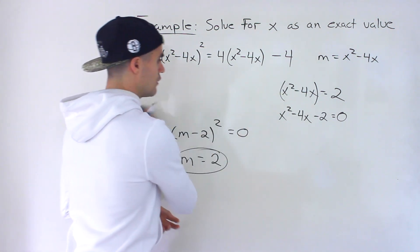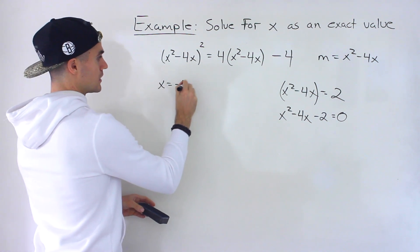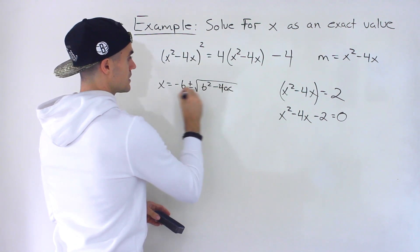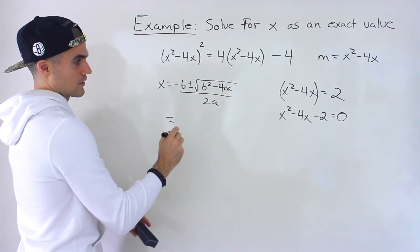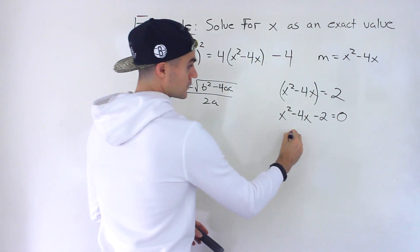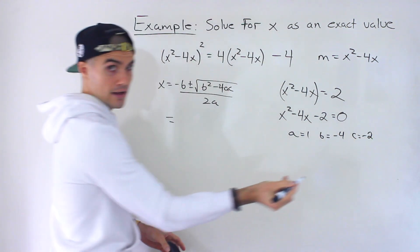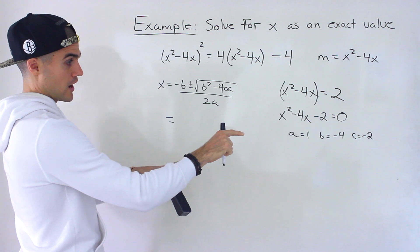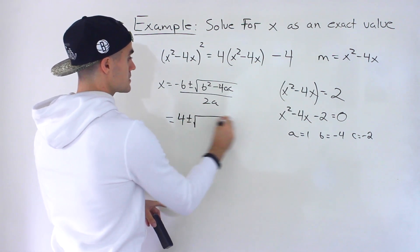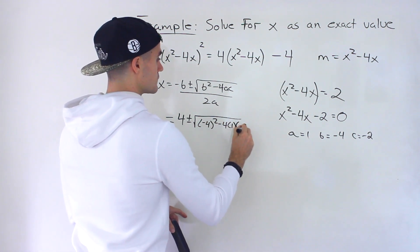We know that the quadratic formula is negative b plus or minus square root of b squared minus 4ac all over 2a. And so now we could take this, the a value here is one, the b value is negative 4, the c value is negative 2. We could take those parameters plug them in here so negative negative 4 would be positive 4 plus or minus negative 4 squared minus 4 times 1 times negative 2 all over 2 times 1.